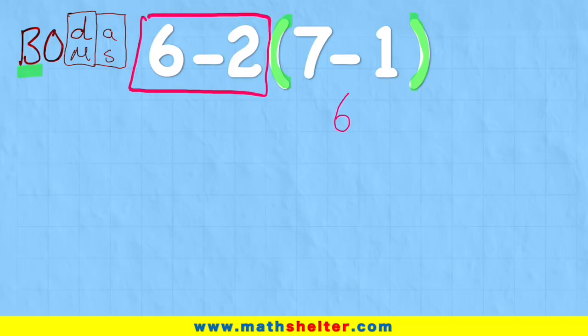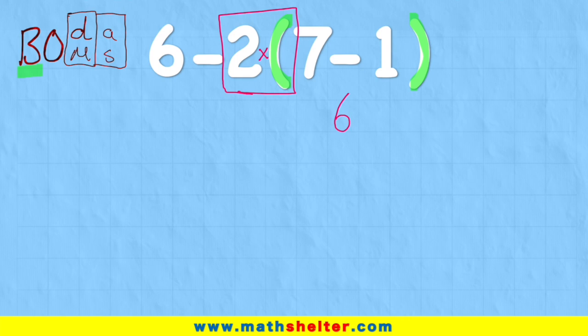What we're actually saying is that this is two times what's inside the bracket, which was seven minus one. We don't put the times symbol here. This can be very confusing.